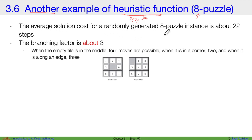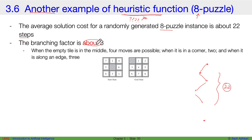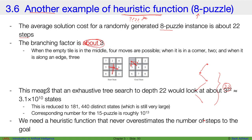The average cost for a randomly generated 8-puzzle instance is about 22 steps, and the branching factor is about 3 — because depending on position, you have 2, 3, or 4 choices, averaging to 3. This means an exhaustive tree search to depth 22 would look at about 3^22 states, which reduces to around 181,000 distinct states — still very large. For a bigger puzzle like the 15-piece puzzle, this number would be extremely large.